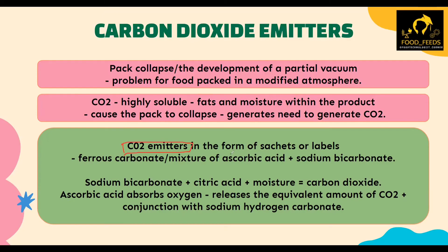Carbon dioxide emitters are available in the form of sachets and labels. Their presence reduces or completely avoids pack collapse or the development of partial vacuum. They are available in the form of ferrous carbonate, or a mixture of ascorbic acid along with sodium bicarbonate. Additionally, sodium bicarbonate combined with citric acid and moisture will also produce carbon dioxide. Ascorbic acid absorbs oxygen and releases an equivalent amount of carbon dioxide when combined with sodium bicarbonate. Remember these compounds as examples for carbon dioxide emitters.